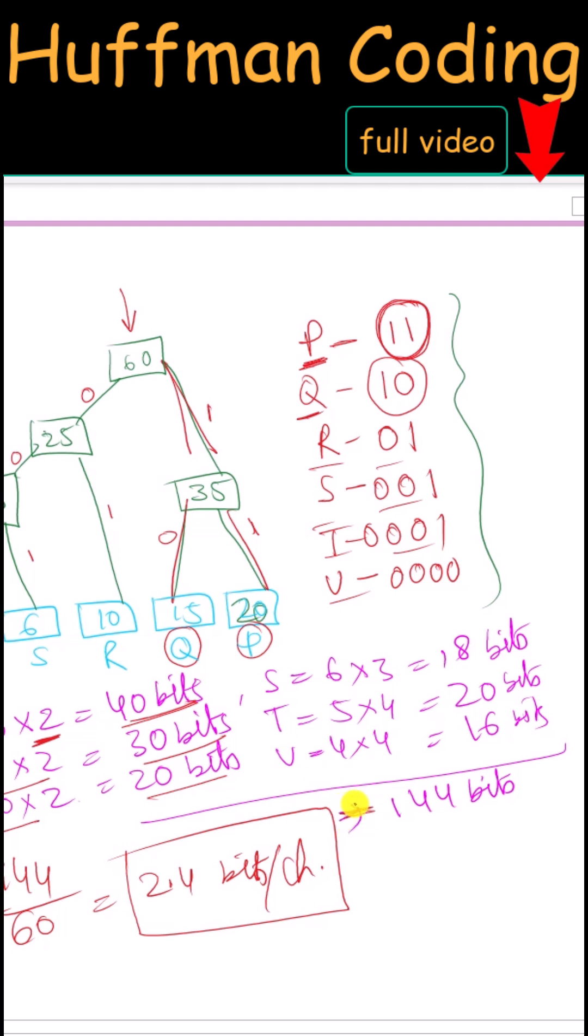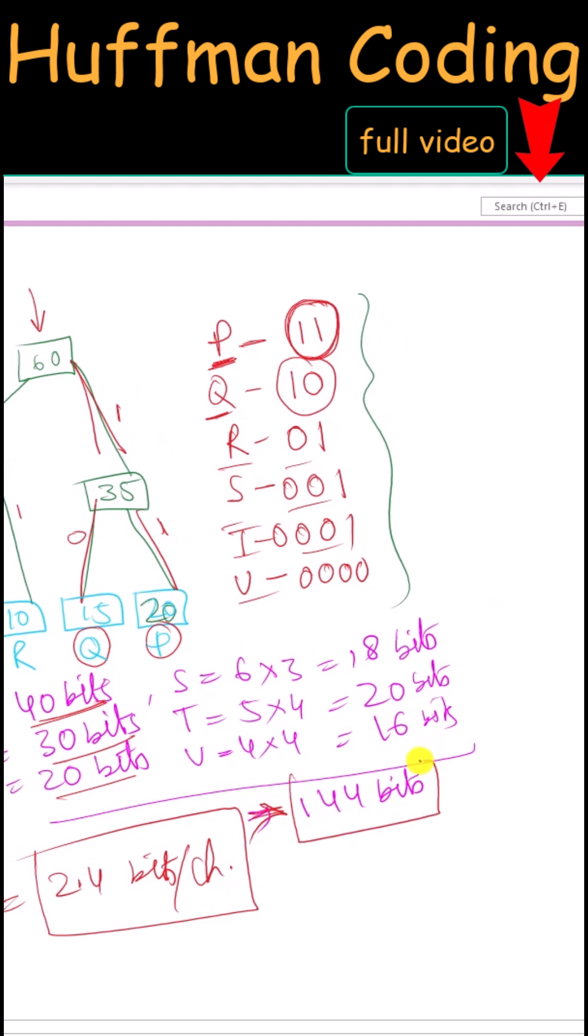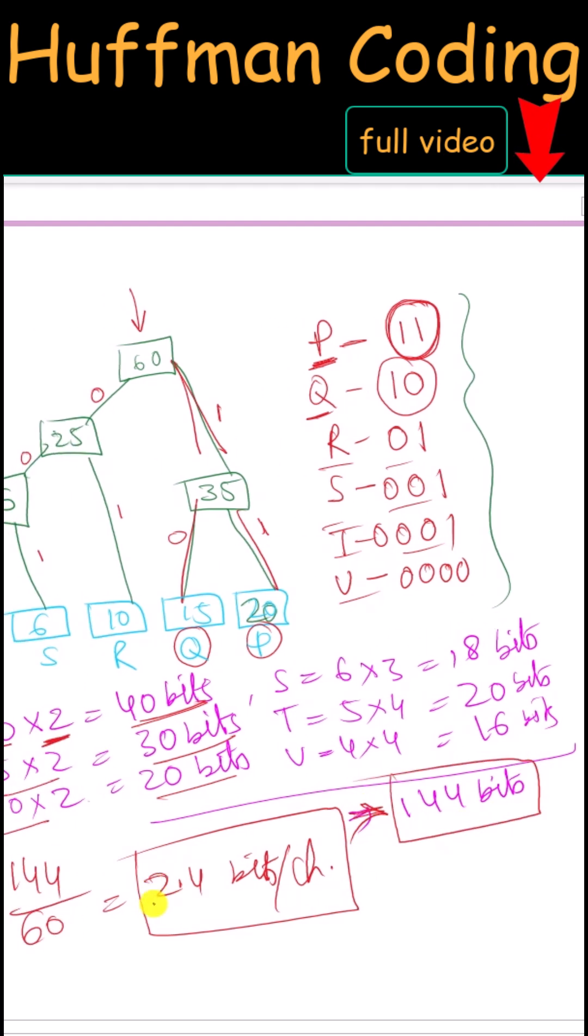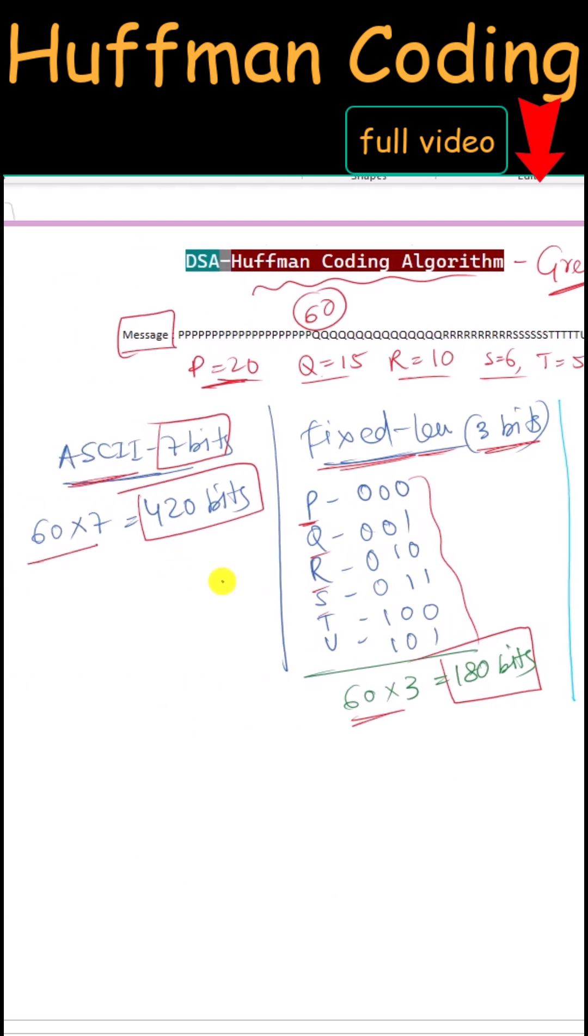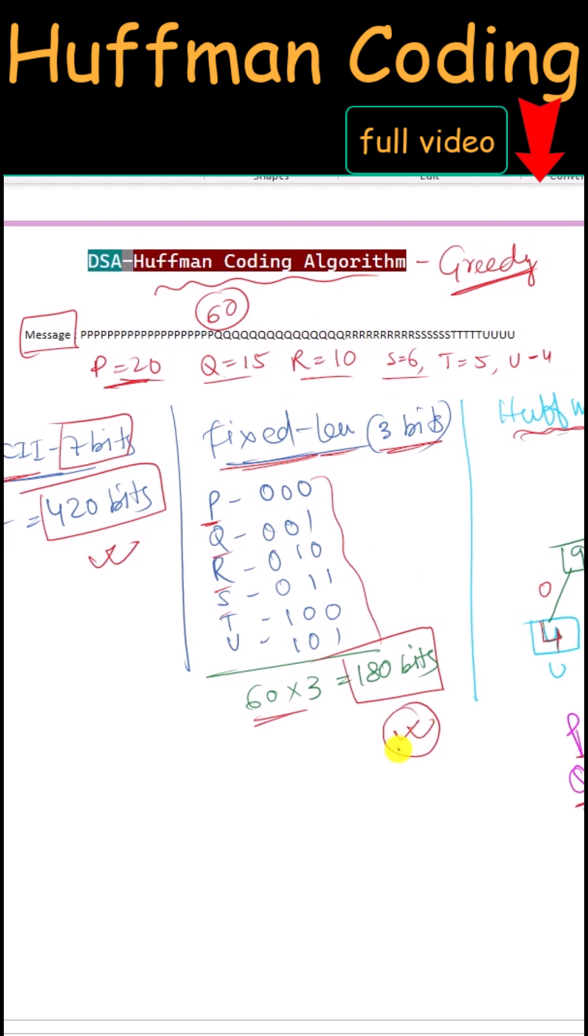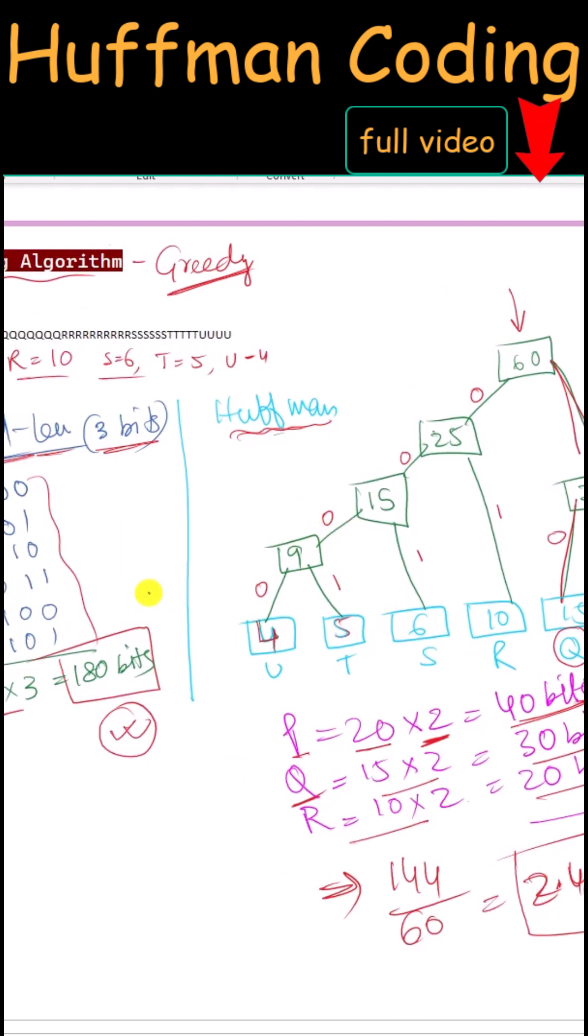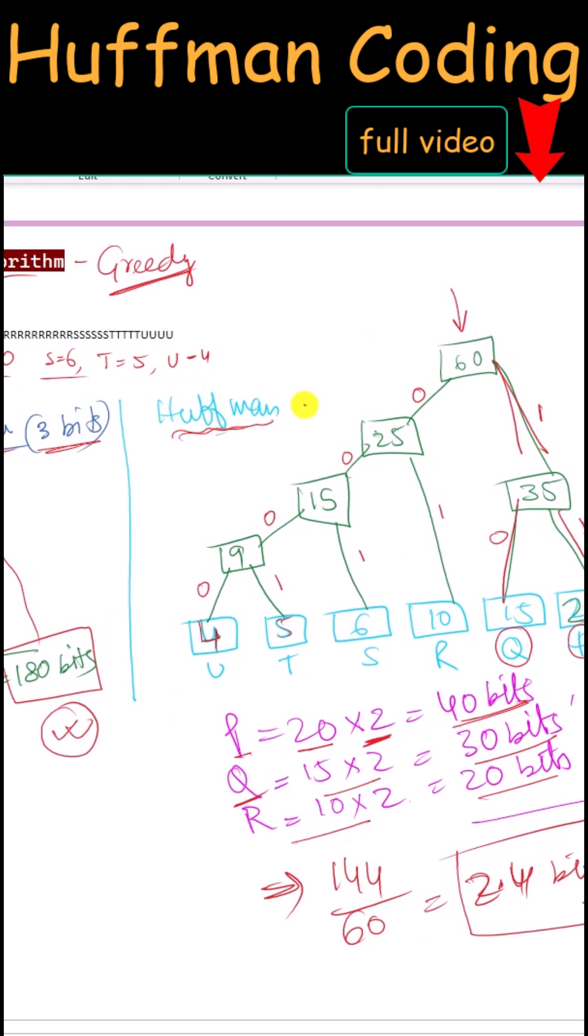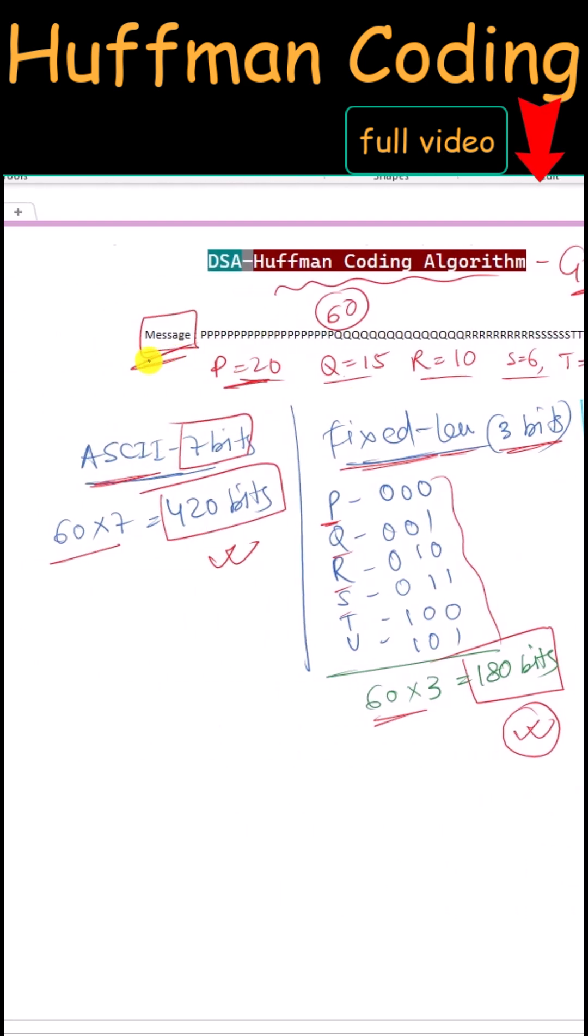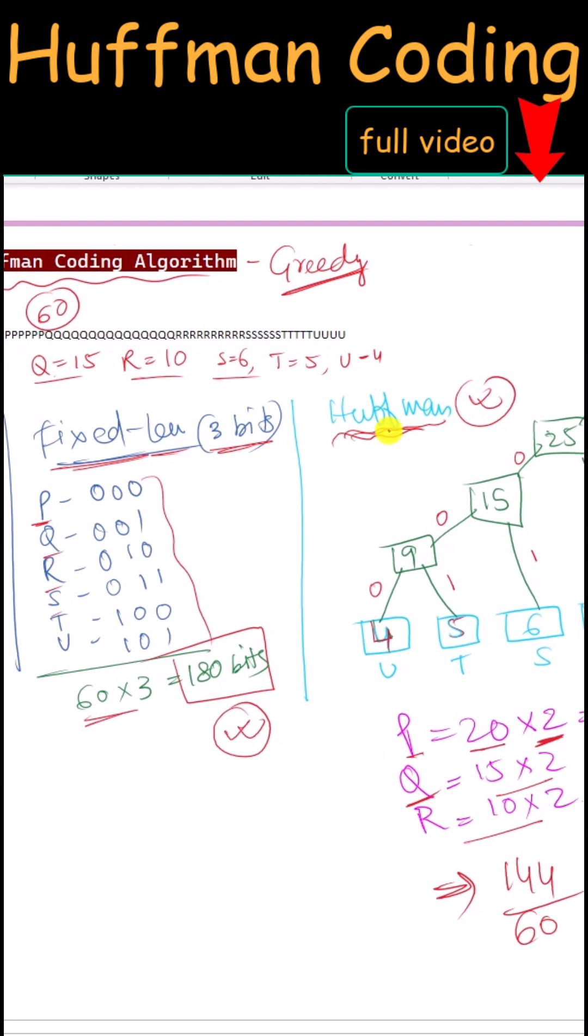The Huffman coding algorithm requires a total of 144 bits. That means 2.4 bits per character, which is way less than the ASCII 7-bit representation or the fixed length 3-bit representation. We can say that for the same message, Huffman coding algorithm is way more efficient to store and transmit the message. Thank you.